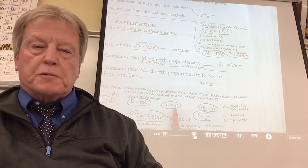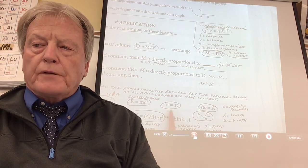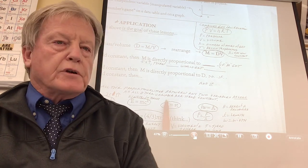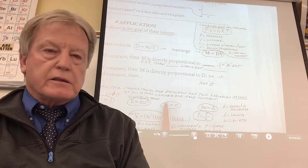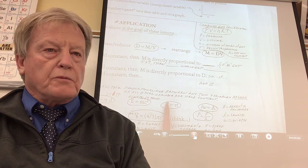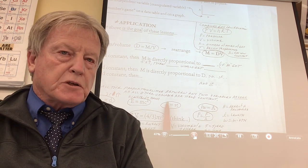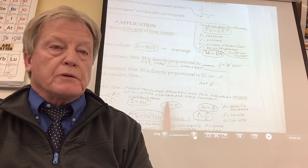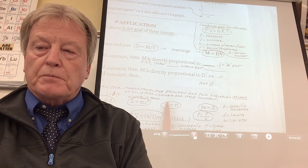Distance equals speed times time. What if I hold distance constant? Then speed and time are inversely proportional. If you're going to grandma's house, that distance doesn't change. If your speed was cut in half — the speed got two times smaller — then the time would get two times larger. It would take you twice as long to get to grandma's house because they're inversely proportional.